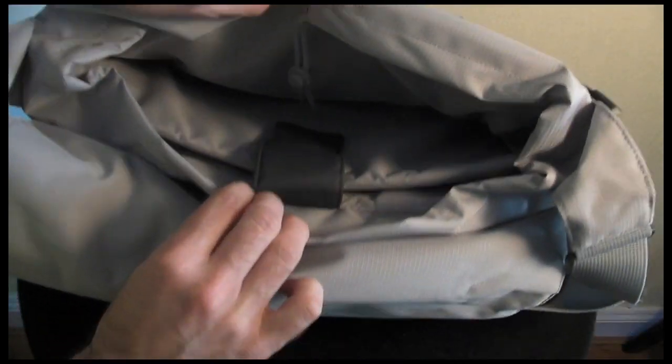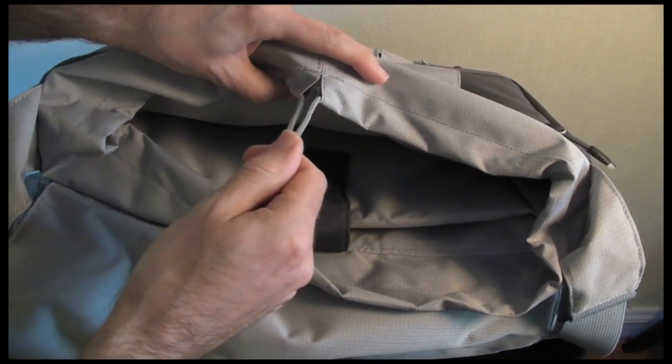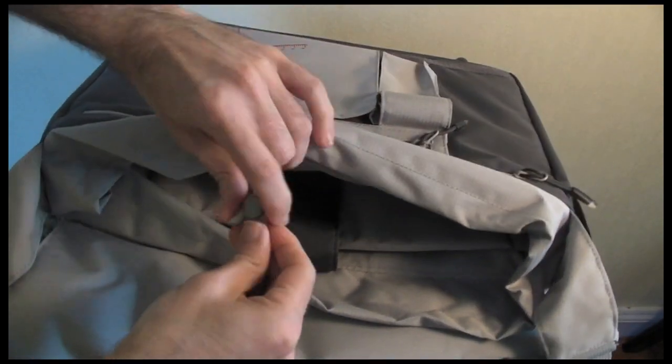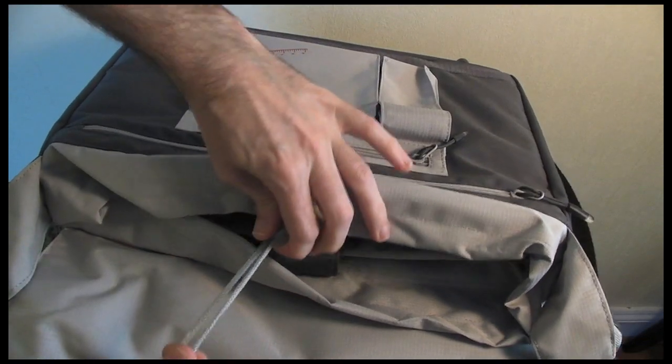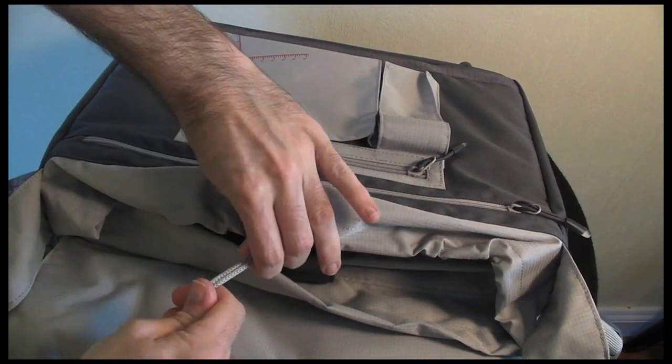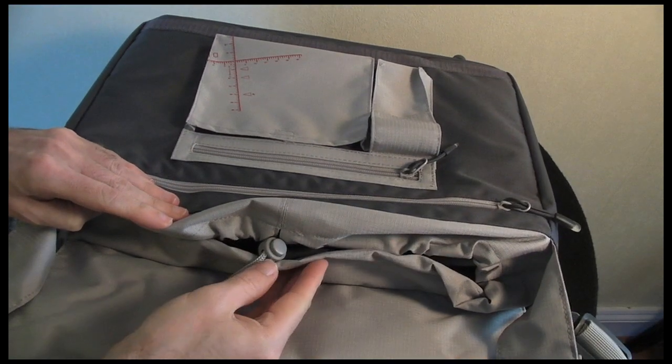The main compartment of the bag has actually got this drawstring attachment so when you've got everything packed up in there you can push this button in and put it all nice and tight so it does actually pull everything in so it's nice and secure.